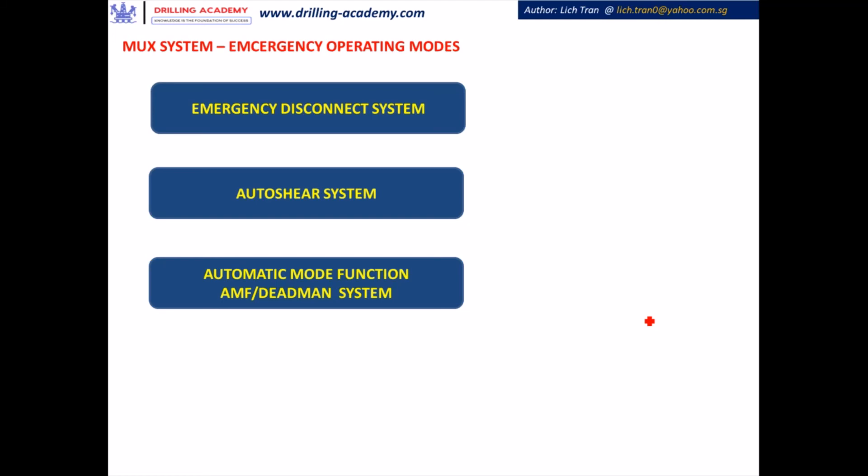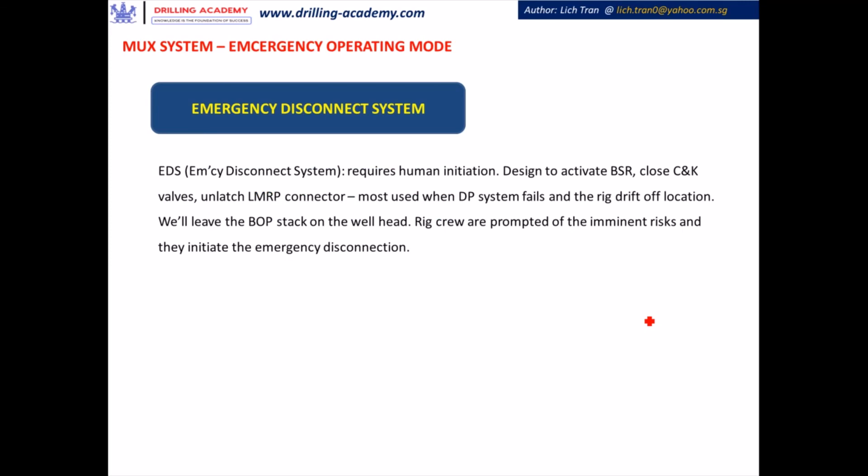Now we examine the emergency operating modes. There are three emergency operating modes: Number 1 is the Emergency Disconnection System (EDS), Number 2 is the Auto Shear System, and Number 3 is the Automatic Mode Function, or AMF deadman system.